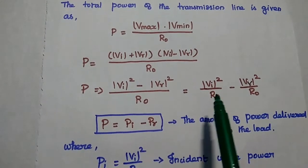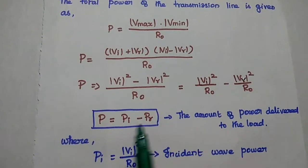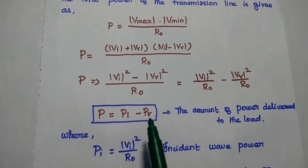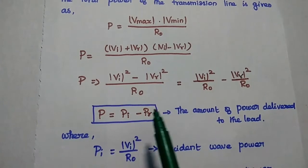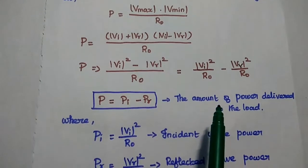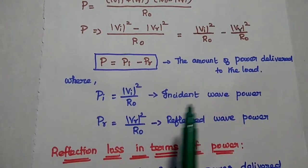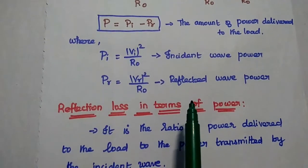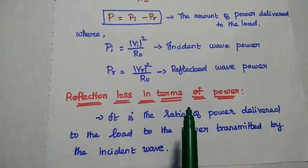This term Vi²/R0 is the power of the incident wave, and Vr²/R0 is the power of the reflected wave. The total power delivered to the load is equal to PI minus PR — that means we subtract the amount of reflected power from the incident power to get the power delivered to the load. Here PI is the incident wave power and PR is the reflected wave power. Next, we are going to calculate the reflection loss due to the mismatch condition.